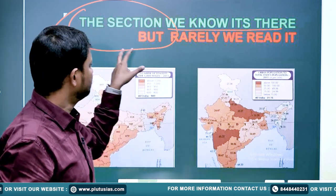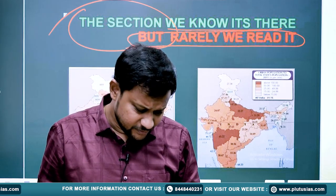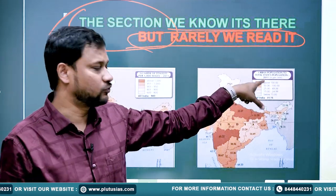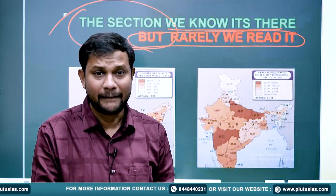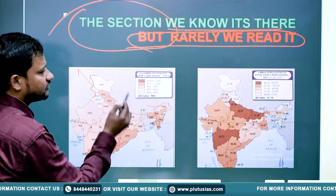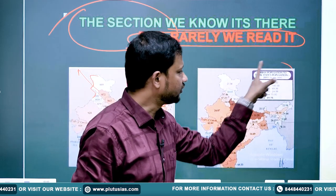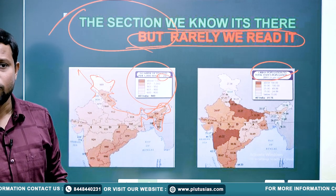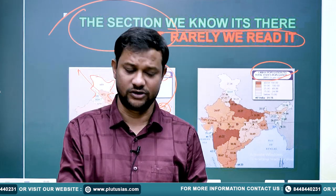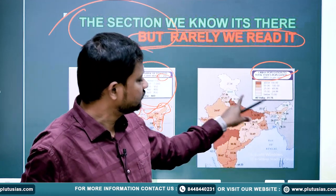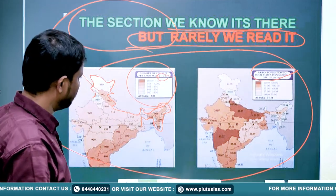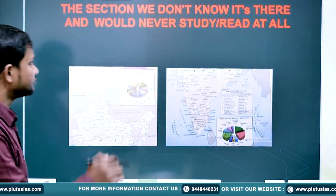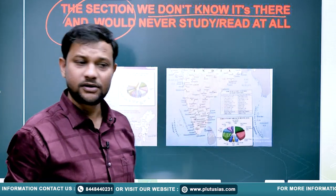The next section is one we know is there in the atlas, but it is rarely that we read it — we consider that information not that important. But believe me, this part forms a very crucial aspect of mapping study. For example, there is a graph for sex ratio in various years like 2011, or an urban population graph. Whenever you answer any question on sex ratio, female literacy, or urban development, you can use this map directly — it has huge information vested within it, equally important alongside the political and physical maps.